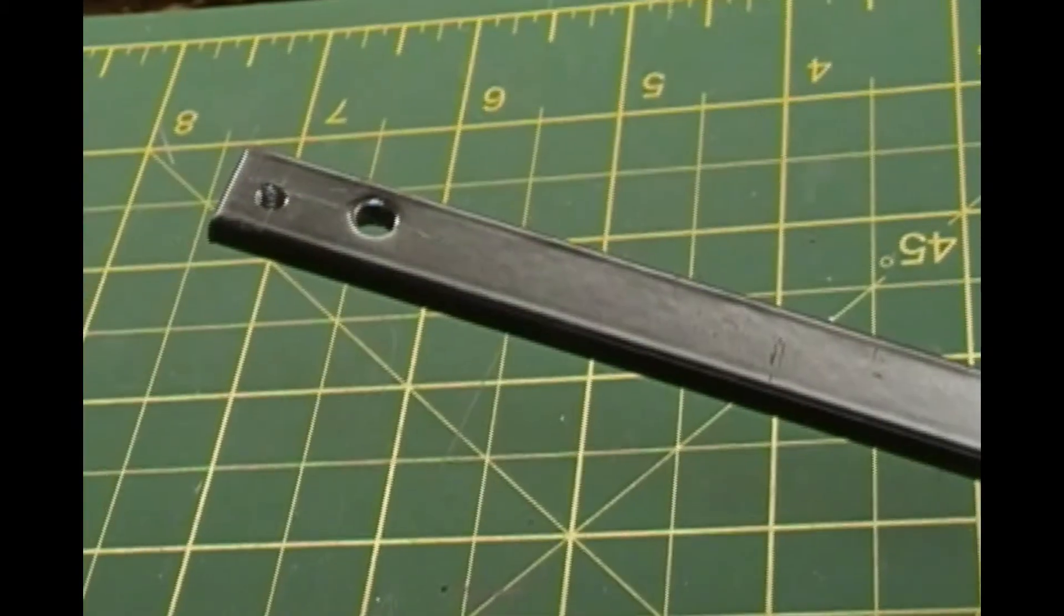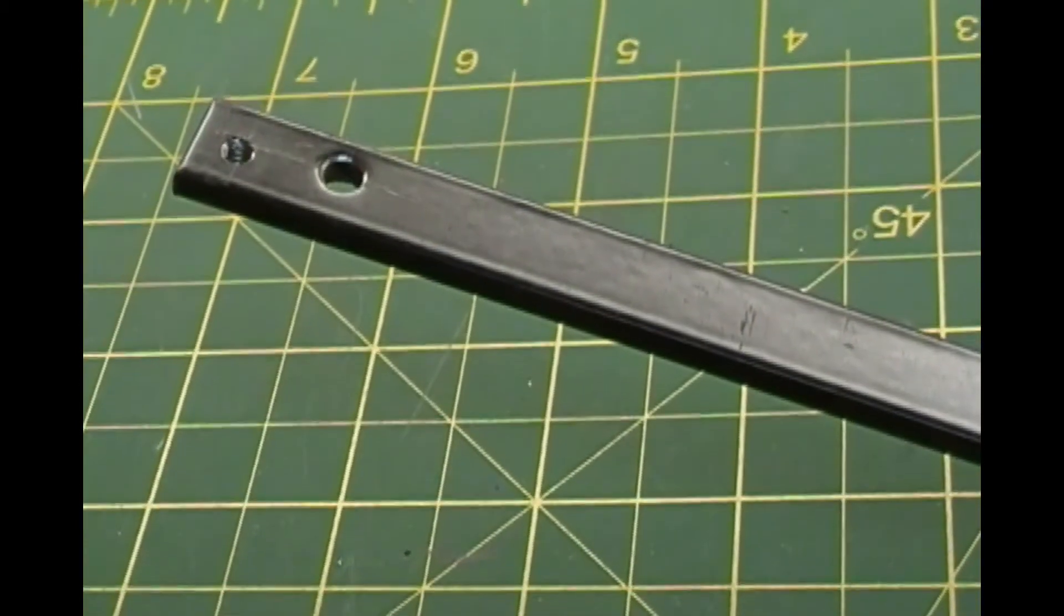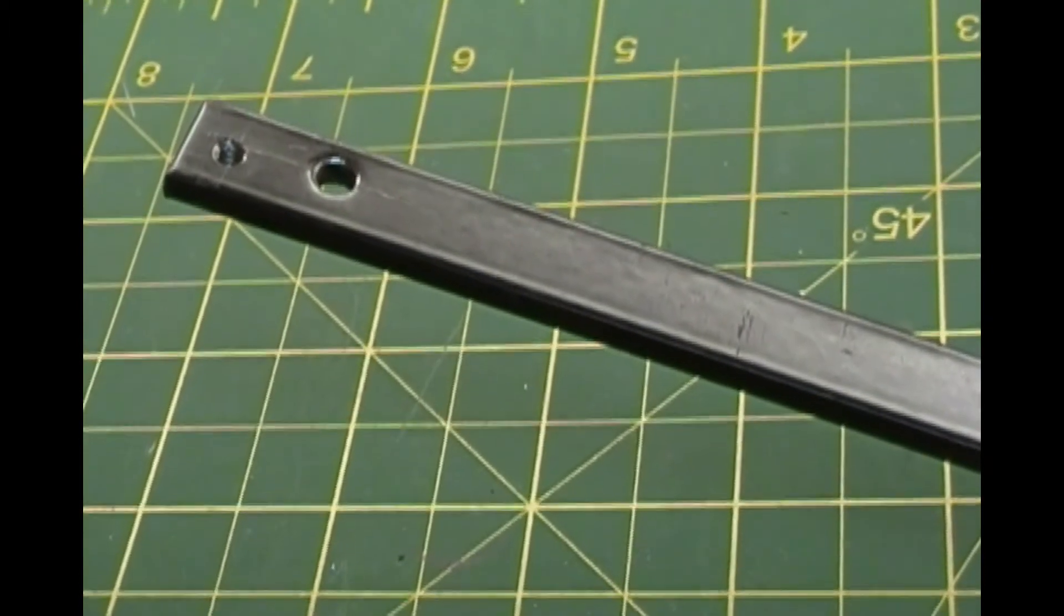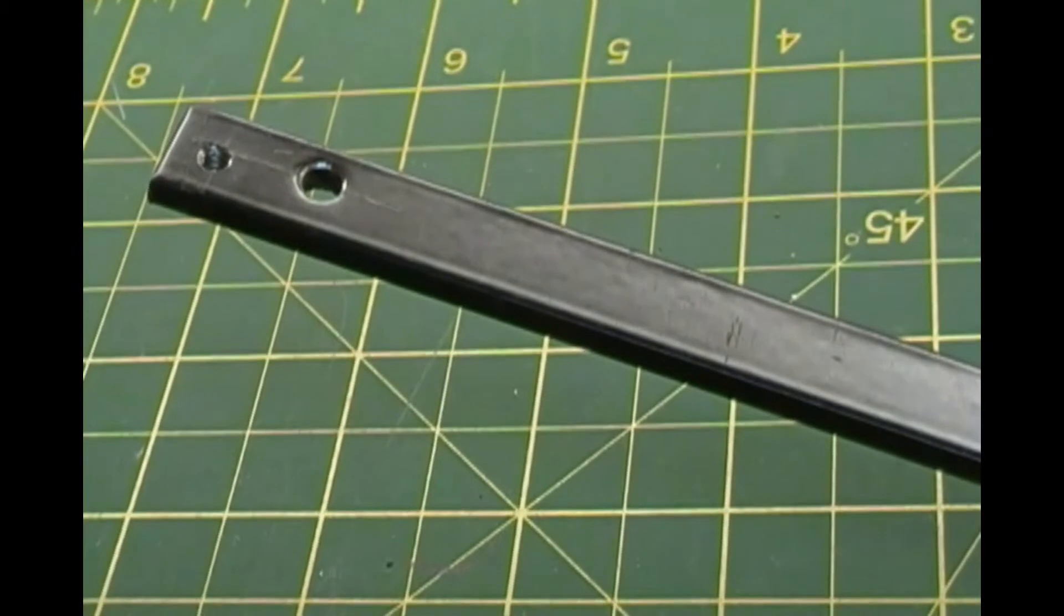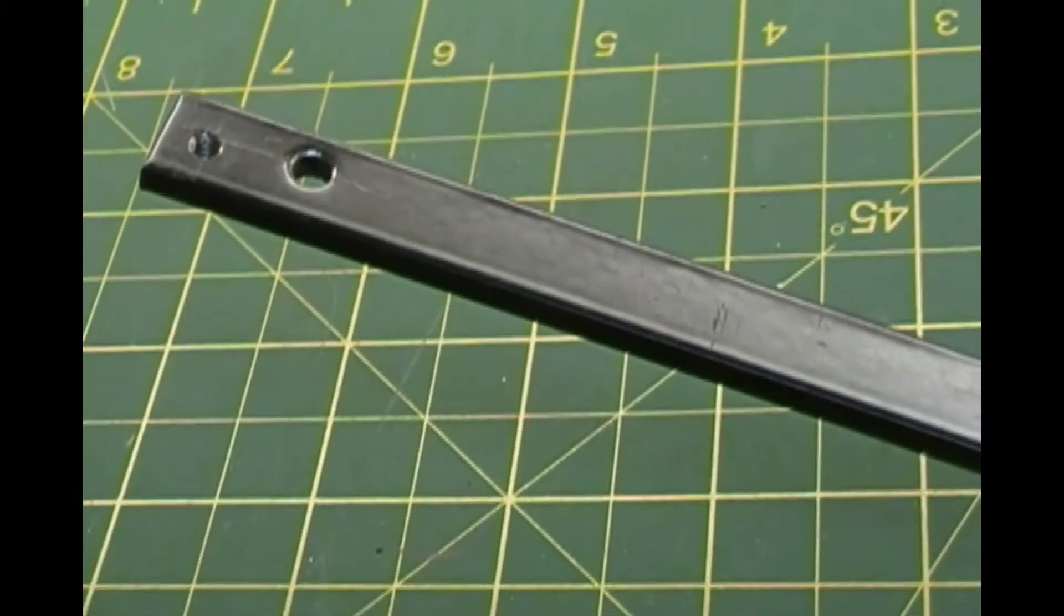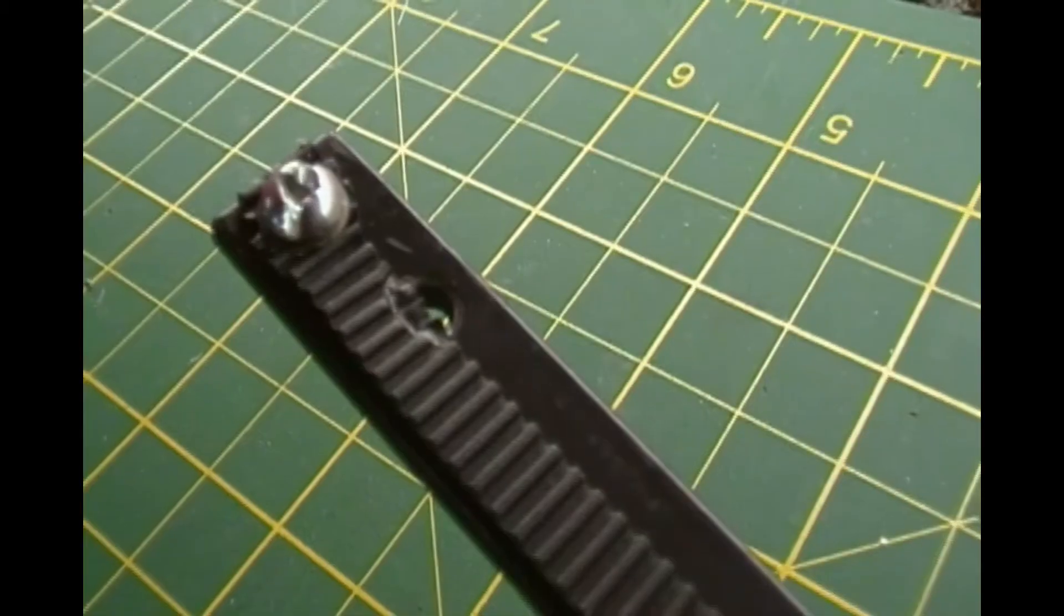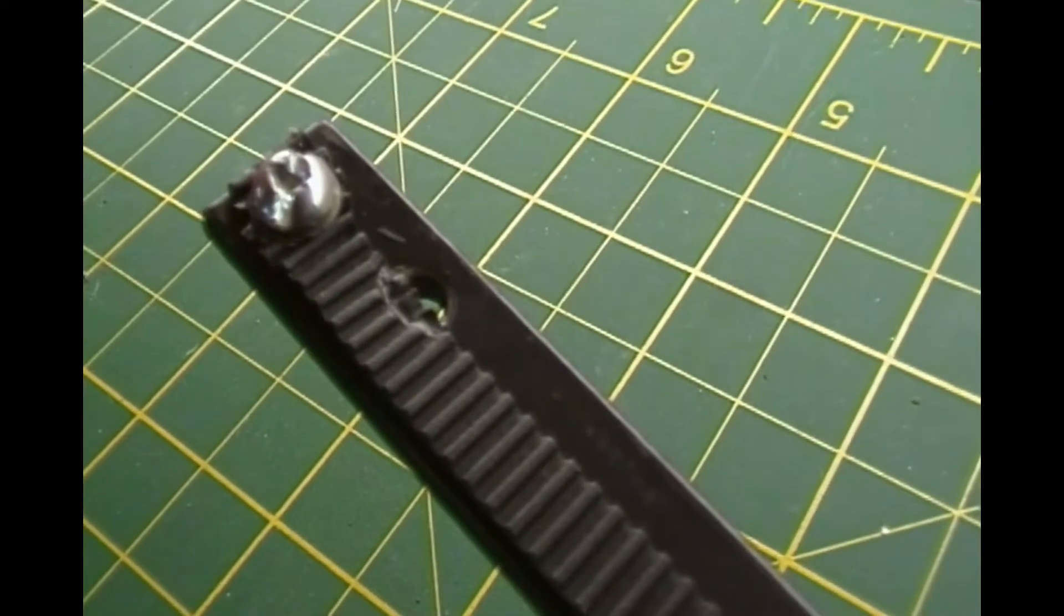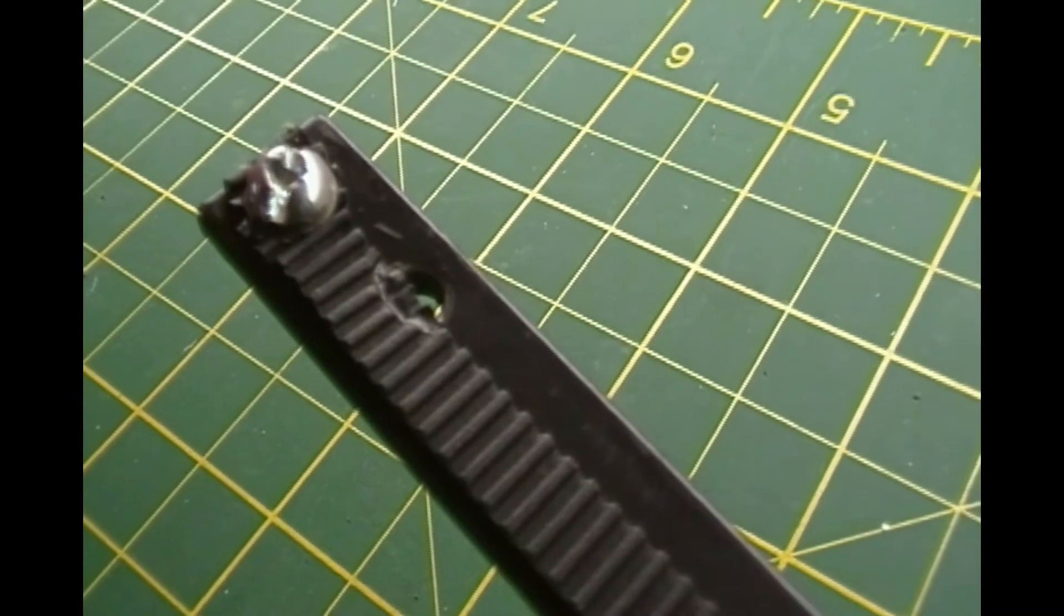I drilled and tapped 6-32 holes into the flat steel located 3.87 inches from both ends. I also drilled 5/32 clearance holes located one inch or 25.4 millimeters from each end. I cut a length of timing belt 36 inches long, then attached it to my flat steel with short 6-32 screws and washers.